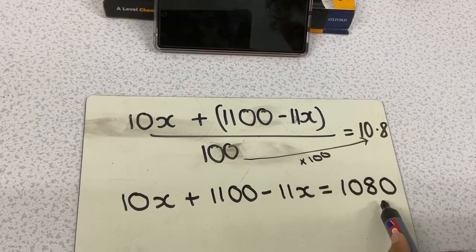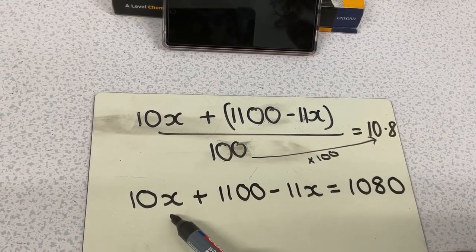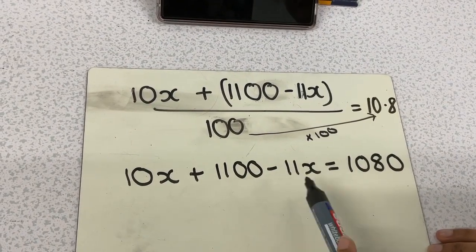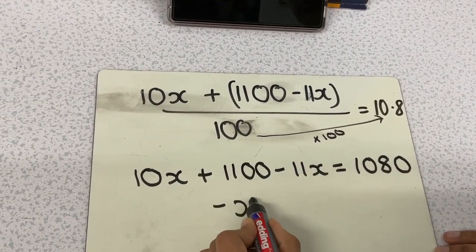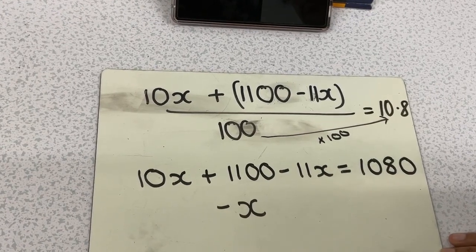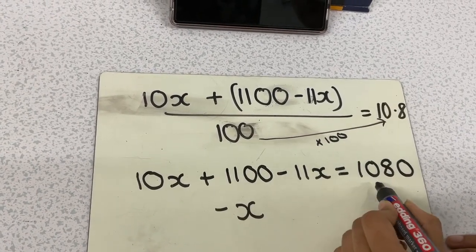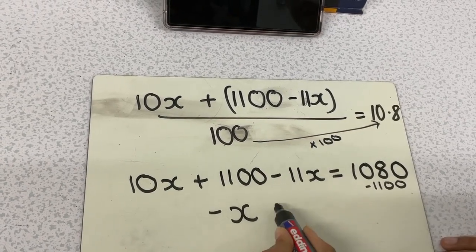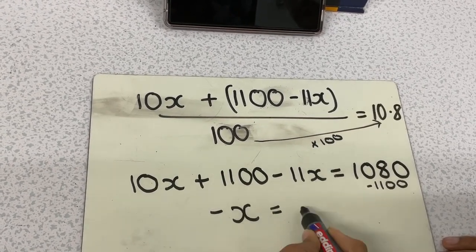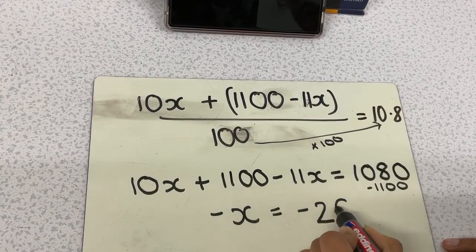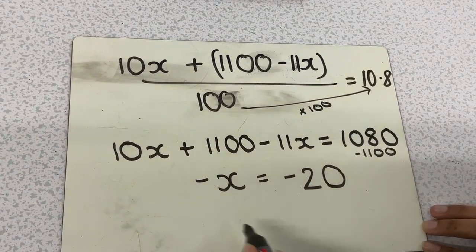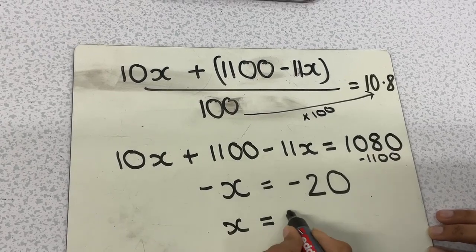So now we have a simple equation that we can work out the answer from. We're going to do 10x minus 11x. This is to group our x's together. So we get minus x. Now, we're going to do 1080 minus our 1100, and this is going to leave us with minus 20. Simplifying this, we're going to get x equals 20.